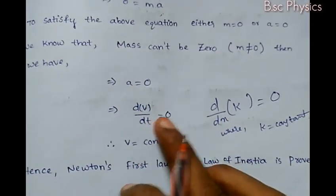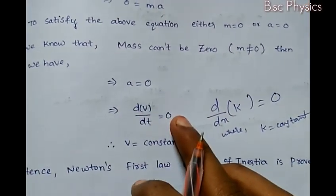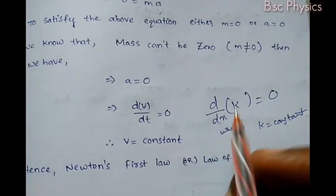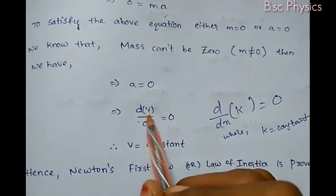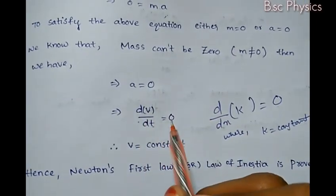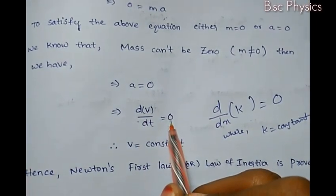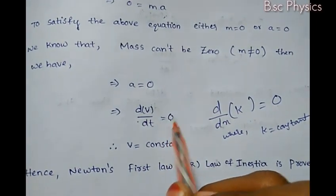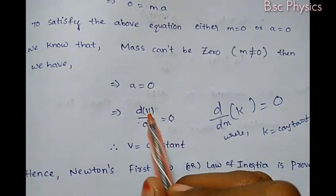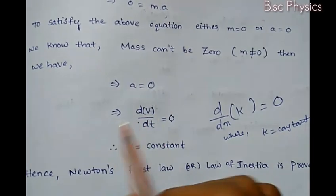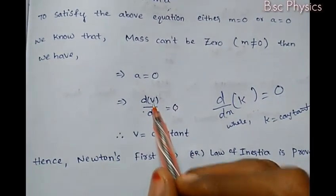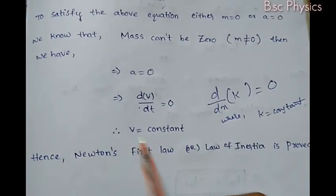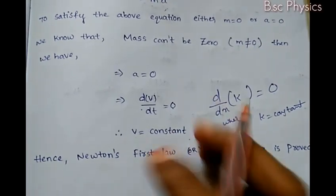So dv/dt equals zero means velocity is constant. This shows that if no external force acts on the body, the velocity remains constant.